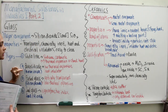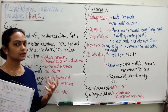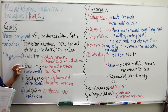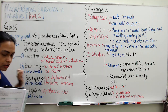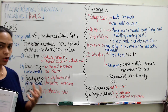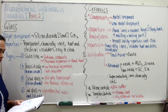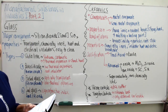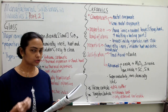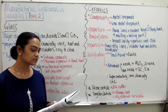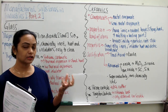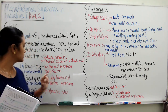Now let's go to borosilicate glass. One of the main constituents is boron oxide — that's where the word 'borosilicate' comes from. Borosilicate has low thermal expansion and is resistant to heat, making it heat-insulated. That is why it is popular for cookware, boiling tubes, and beakers — because it won't crack when hot water is added.